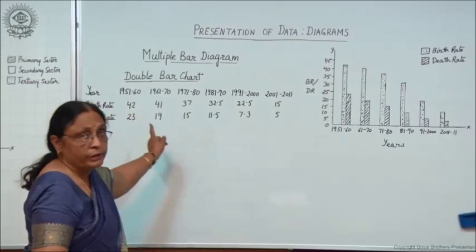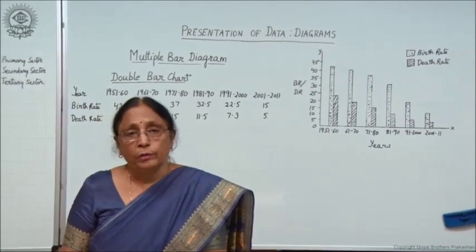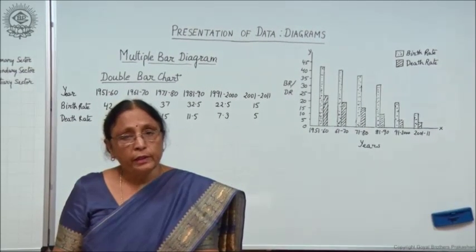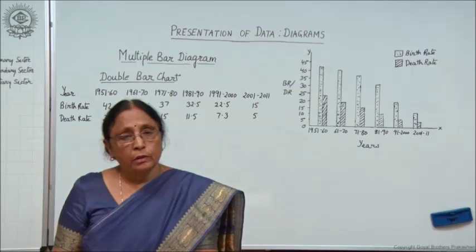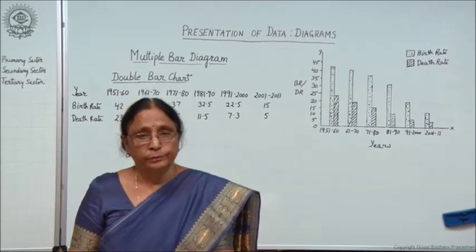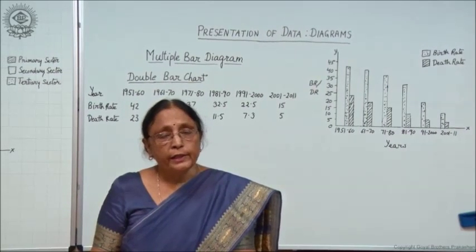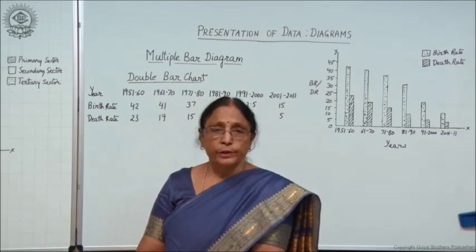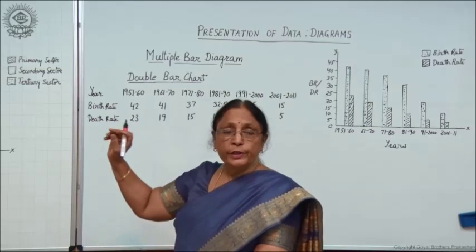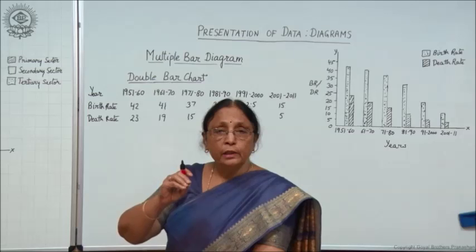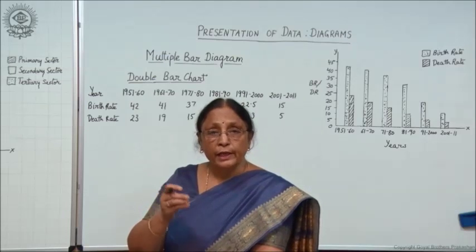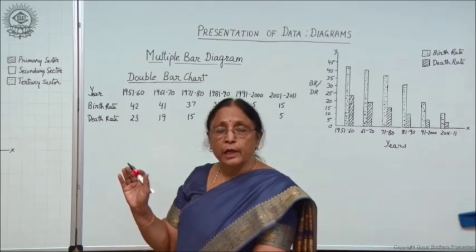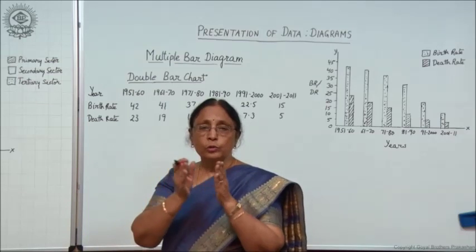Here we have taken the example of birth rate and death rate. Birth rate is the rate at which the number of children are born per thousand per year. Death rate is the number of people dying per thousand per year. So here we have to compare how many are born and how many are dying in a particular year, showing two variables with two adjacent bars.